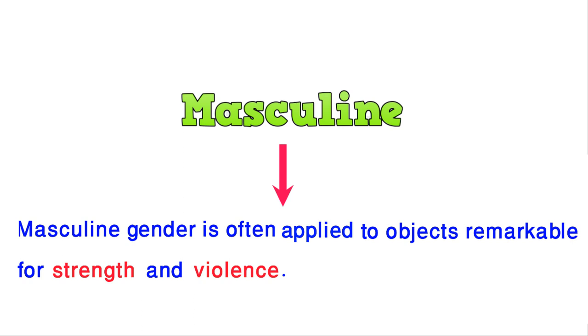To repeat again: masculine gender refers to things that create strength, masculinity, and violence. Males are dominant, so words associated with dominance and strength fall into the masculine gender category.